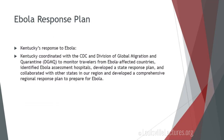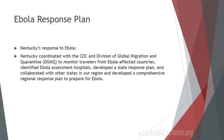Just so you know, Kentucky has an Ebola response plan. Kentucky's response to Ebola has been coordinated with both the CDC and the Division of Global Migration and Quarantine. Their response is to monitor travelers from Ebola-affected countries, identify Ebola assessment hospitals, develop a statewide plan in collaboration with states in our region, and develop a comprehensive regional response plan to prepare for Ebola. We are in region four, which includes Florida, Georgia, the Carolinas, Tennessee, and Kentucky.